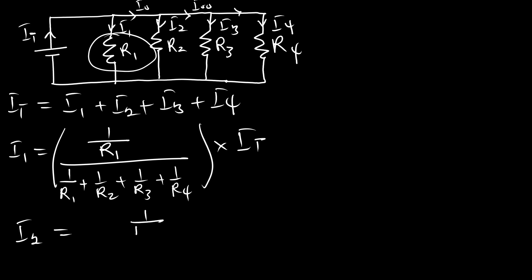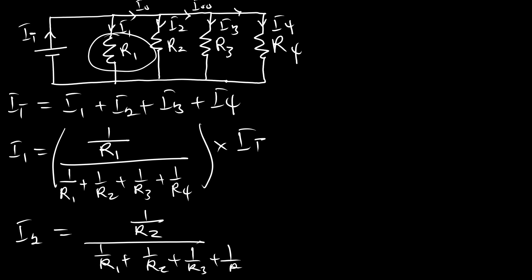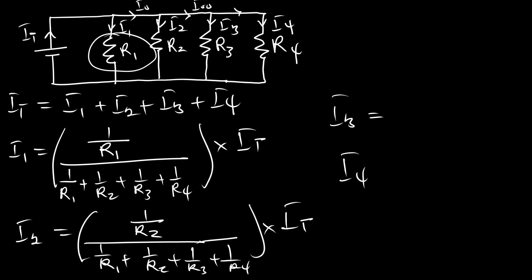The same pattern applies to I2 with 1/R2 in the numerator, and similarly to I3 and I4. If there are five or six resistors you can repeat the same pattern. Let's now solve some examples to find out how to calculate the current in the various branches.